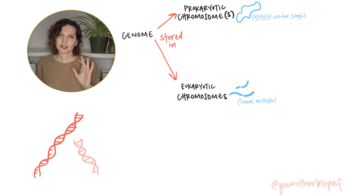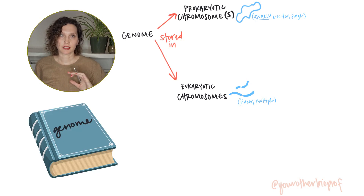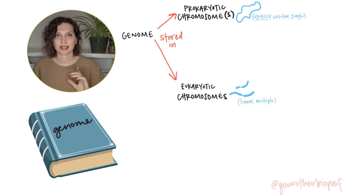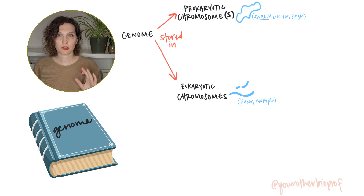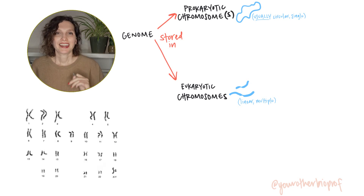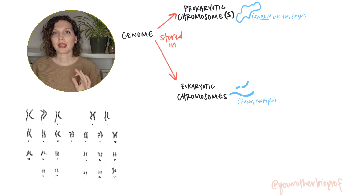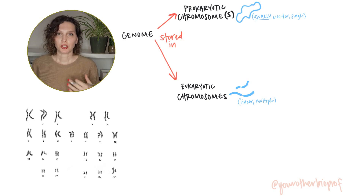You can think of the genome sort of like a book, and the individual chromosomes like chapters within that book. Humans have 46 chromosomes typically — that's two sets of 23 different types of chromosomes.